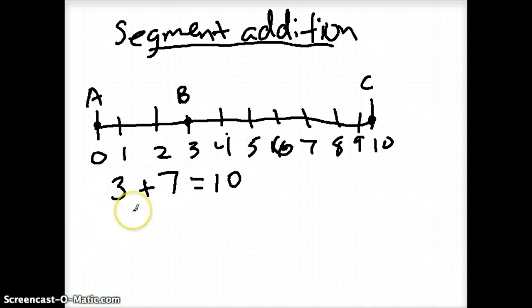I can talk about it more abstractly. I could say that the distance from A to B plus the distance from B to C should give me the total distance from beginning A to the end C. So this segment length plus this other segment length should give me the total length.